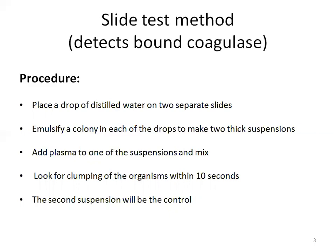First, place a drop of distilled water on each end of a slide or on two separate slides. Then emulsify or mix a colony of the test organisms, which must already be checked by Gram staining. Add a loopful of plasma to one of the suspensions and mix gently. Look for clumping of the organisms within 10 seconds. No plasma is added to the second suspension — this is the control, used to differentiate any granular appearance of the organism from true coagulase clumping.